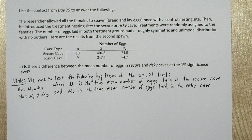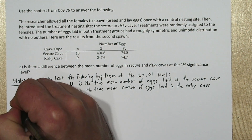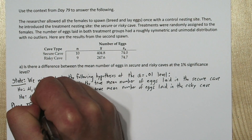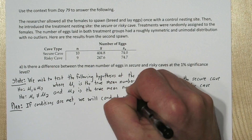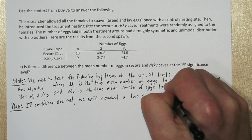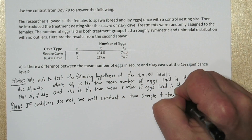Now we don't know the population standard deviation. We know the sample standard deviations for each of these groups, but not the population standard deviations. So we have to use a t-test. For the plan step, if conditions are met, we will conduct a two-sample t-test. That's our inference method.